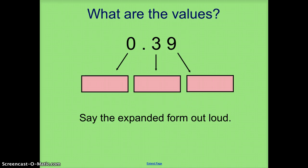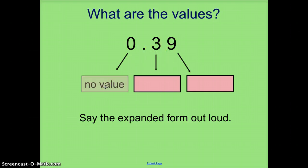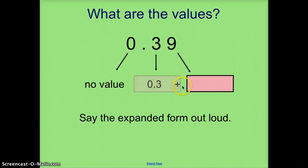We'll do the same thing looking at this problem: 0 and 39 100ths. The zero is going to have no value. Here we have a 3 in the 10ths place, so I know that's just going to be 3 10ths plus 9 100ths.